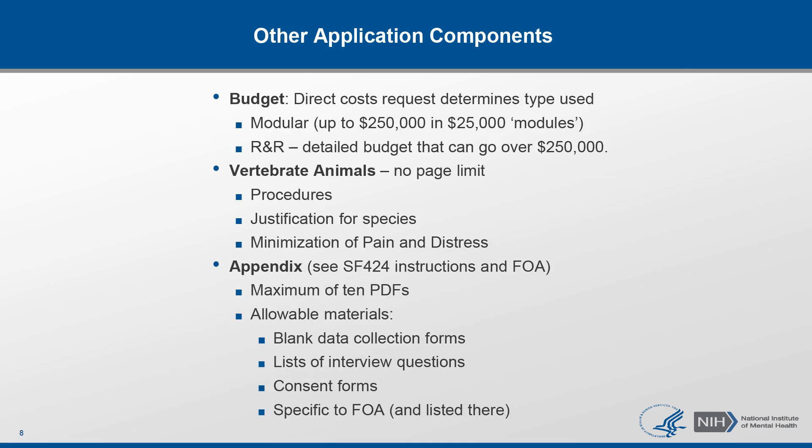There are two primary types of budget forms: the modular budget form and the detailed research and related budget form, also known as the R&R. Generally you would use the R&R budget form if you are applying for more than $250,000 in direct costs per budget period. Modular budgets are simplified, so detailed categorical information doesn't need to be submitted.